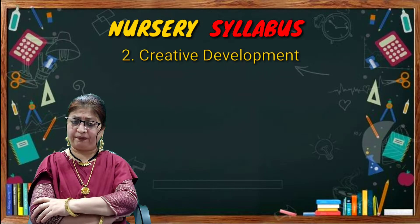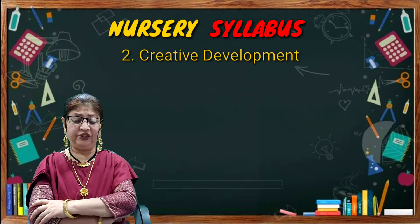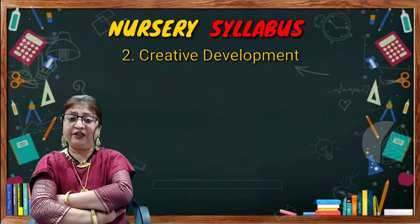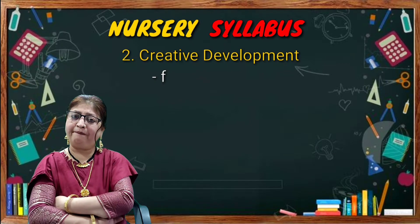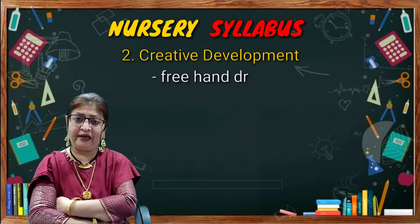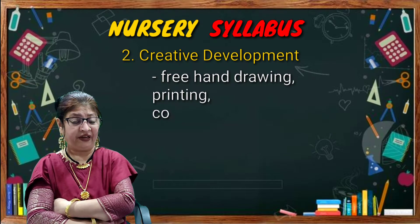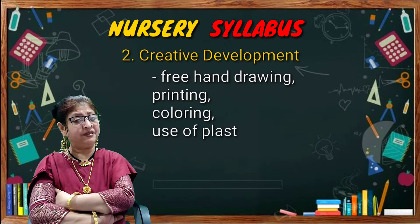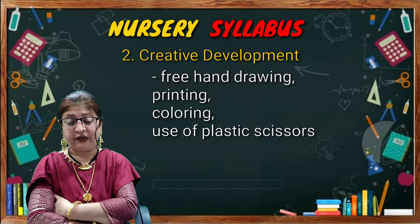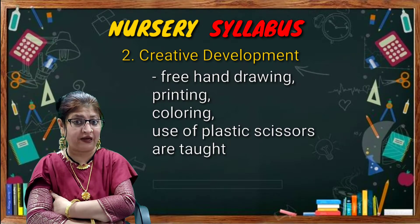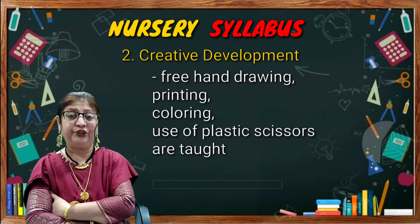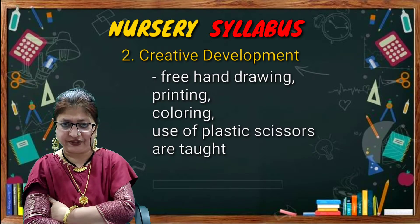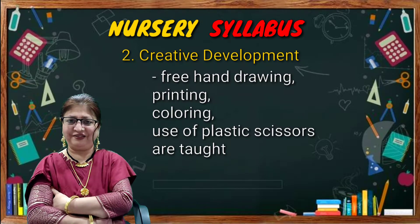The next topic is creative development. In this topic, children are made to do freehand drawing, printing, and coloring. They can also use scissors for cutting — but not the scissors that mommy and daddy use. You can use the plastic scissors available in the market.